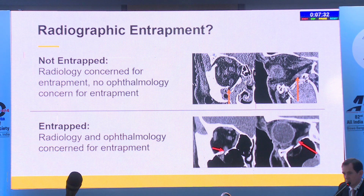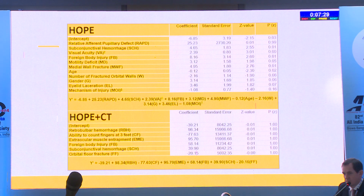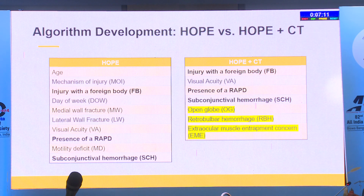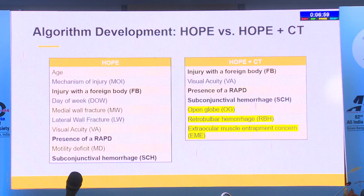For HOPE, age, mechanism of injury, and foreign body were important factors. With HOPE CT and the addition of ophthalmology CT overread, the number of important factors was narrowed significantly, limiting which variables determined whether a concurrent severe emergent injury occurred with the fracture.